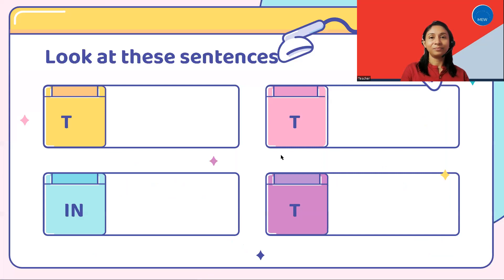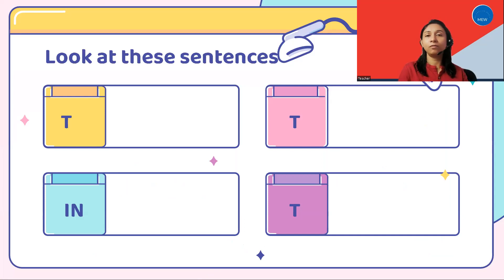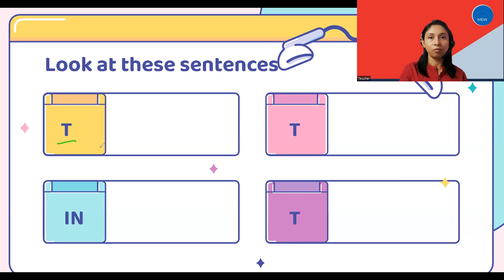Now let's begin. Transitive and intransitive verbs are a fraction of a very big topic called verbs, which can be categorized into many types. However, this is only a fraction of the whole topic. I am going to take four examples to first try to understand what is the difference between transitive and intransitive verbs. To signify transitive, I have used T as a short form, and IN for intransitive verbs. So don't get confused — T will always mean transitive and IN will mean intransitive in this video.